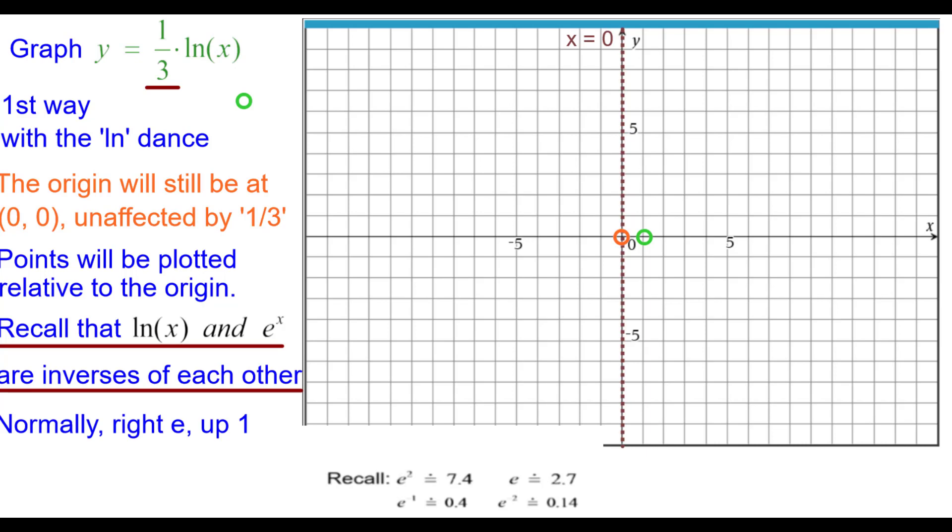Normally it's right e up one, but in this case it's going to be right e up a third. Normally, right e squared up two, and e squared is about 7.4, so 7.4 up two-thirds in this case.